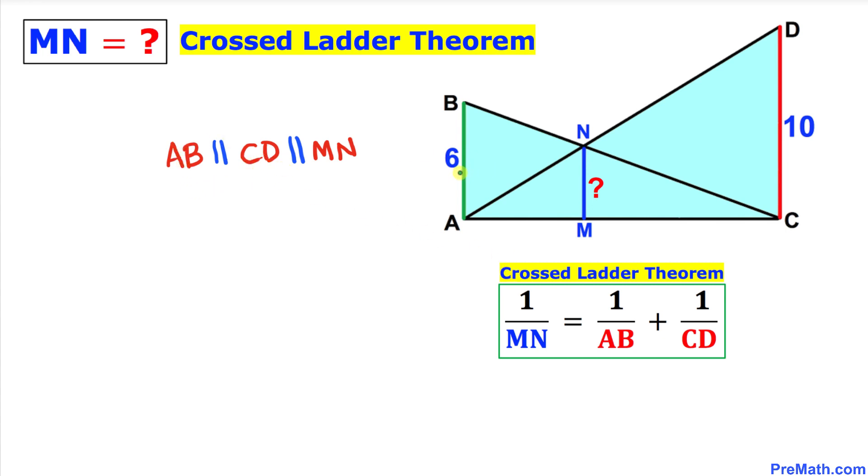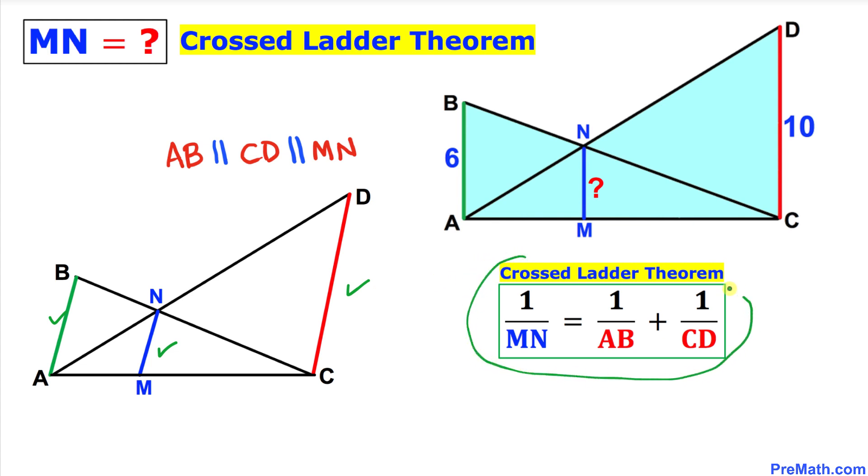Moreover, this formula is going to be valid as long as these line segments AB, CD, and MN are parallel. Here's one more illustration as you can see—AB, CD, and MN they are parallel, so we can easily apply this Crossed Ladder Theorem as well.